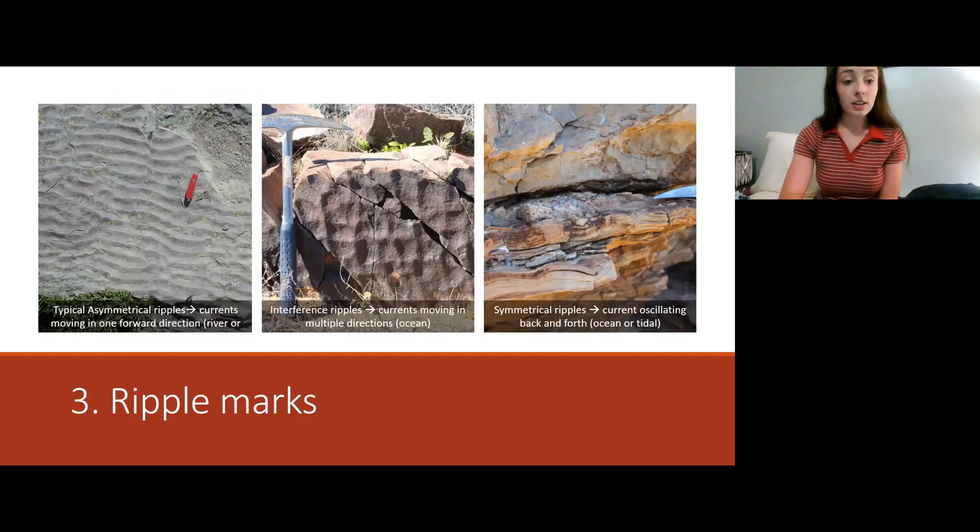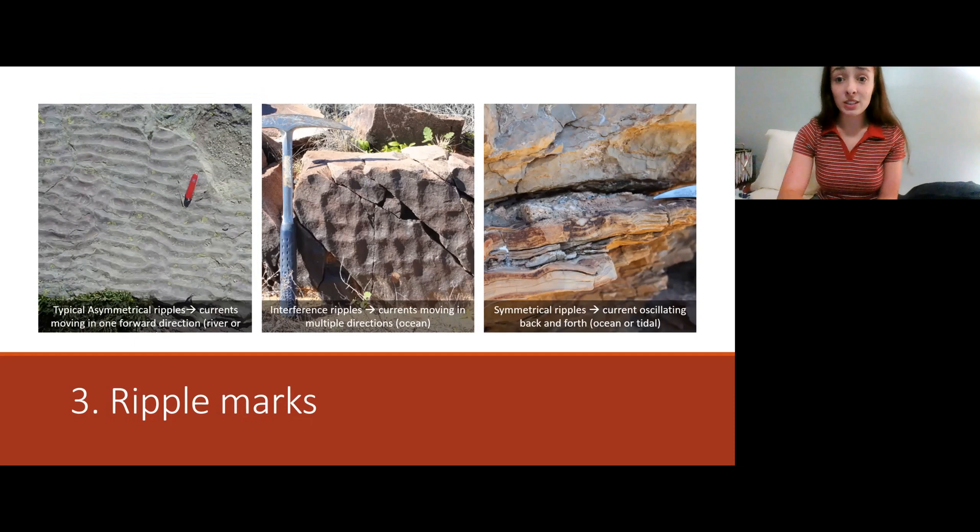Ripple marks, there are asymmetrical ripple marks, interference ripple marks which are diamond shaped, and then symmetrical ripple marks. All of these different ripple types form in different environments and we will be getting to those in different videos.